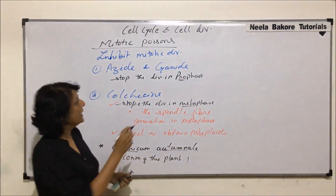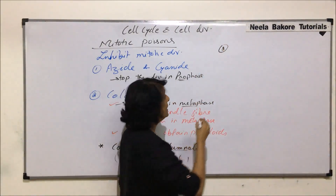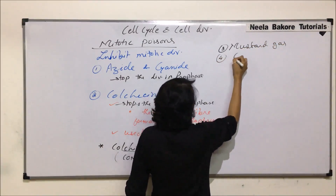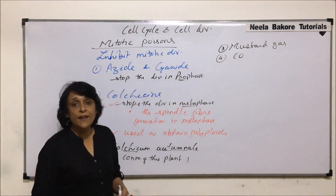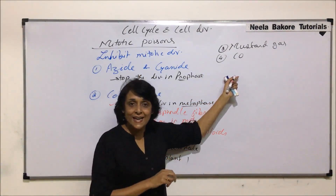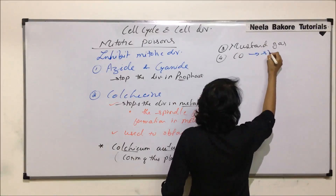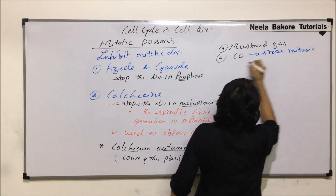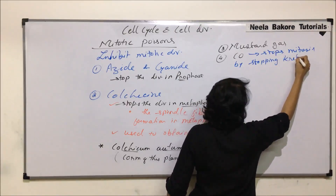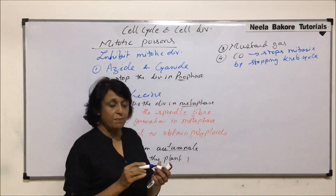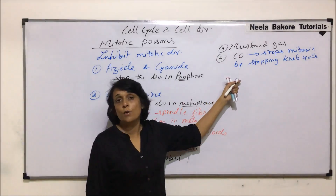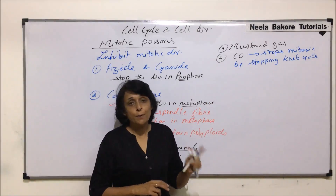Another mitotic poison can be mustard gas. Another is carbon monoxide. Carbon monoxide stops mitotic division because it stops the Krebs cycle, so its effect is actually indirect. By stopping the Krebs cycle, ATP synthesis is affected, and since cell division requires ATP, the cell division would be stopped.